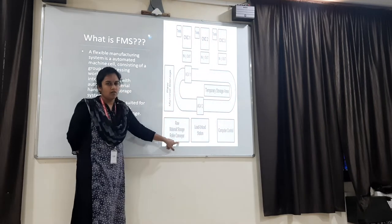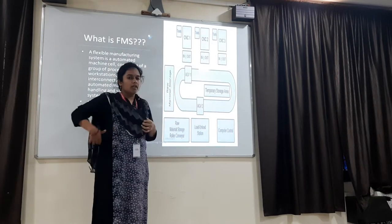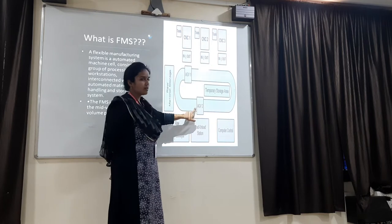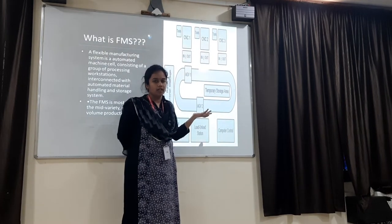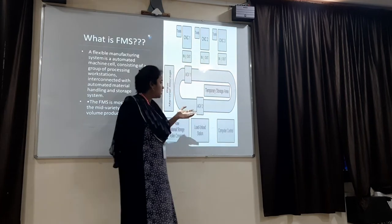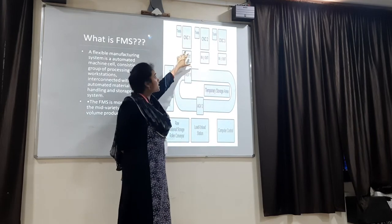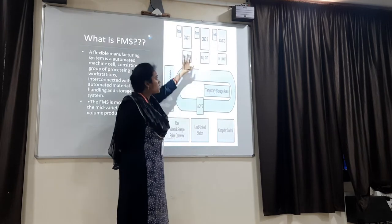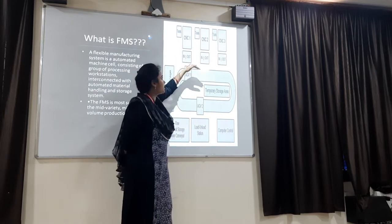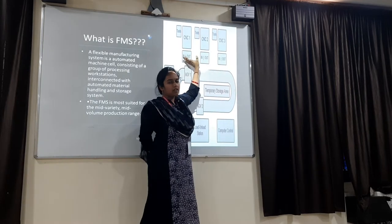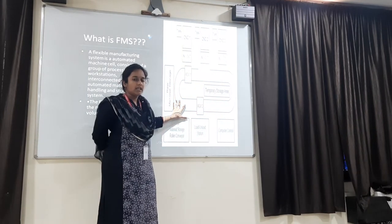Here you will have raw material storage and conveyors. Let us see the working condition. From here, loading of the material will be done to the conveyor, and then the AGV — you can also have robots as an AGV — will carry the work to where it needs to go. The first operation is done on CNC station one, two, or three. After the first operation, the AGV removes the product from that CNC machine and moves it to the next station. After completing all operations, the unloading will be done.